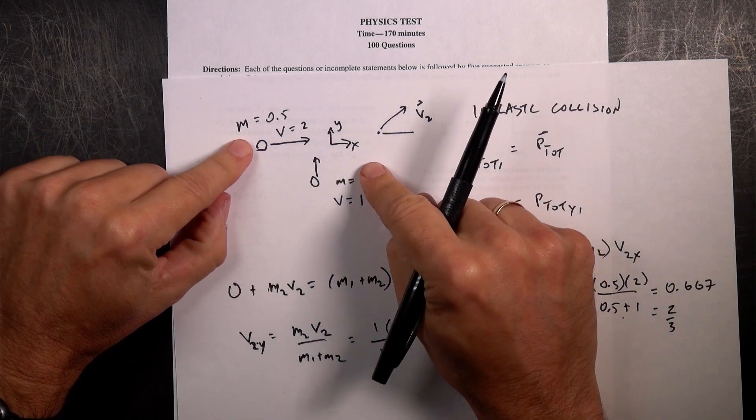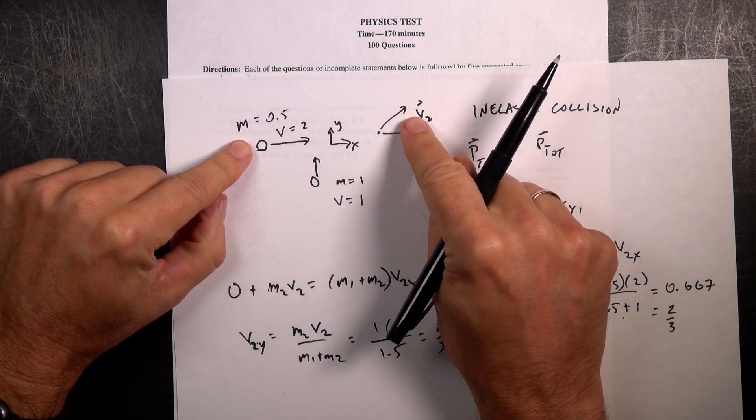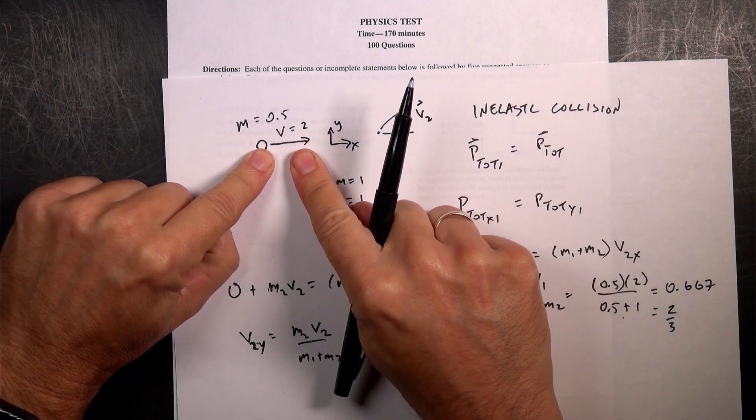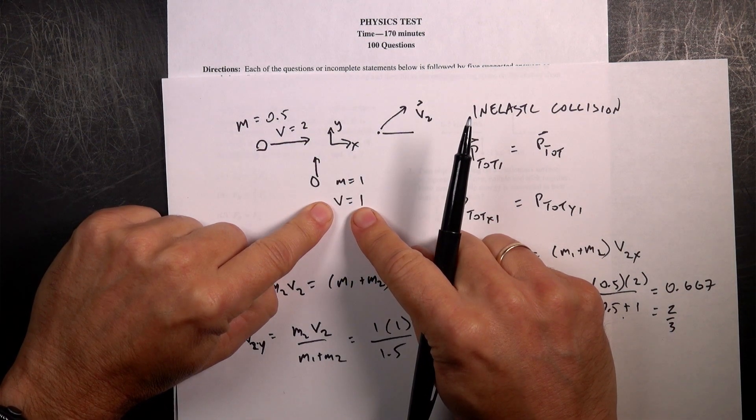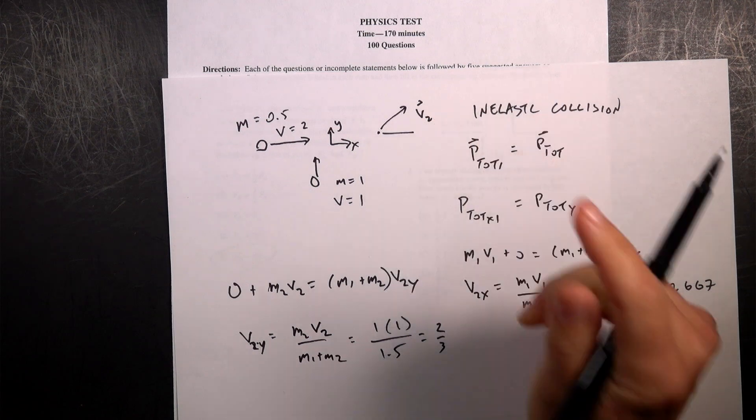And that makes sense, right? This is going to move off at a 45 degree angle because the momentum of this one is 1. The momentum of this one is 1. So the X momentum and the Y momentum have to be the same afterwards.